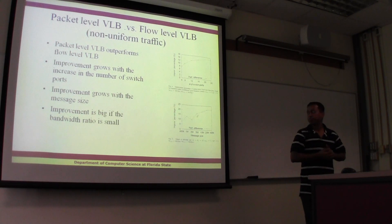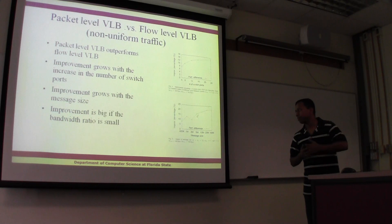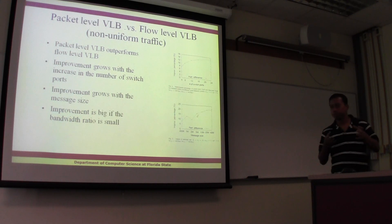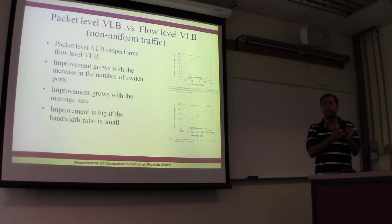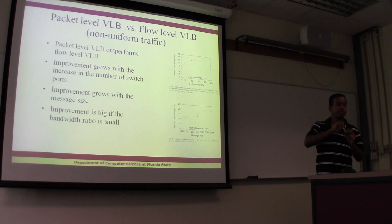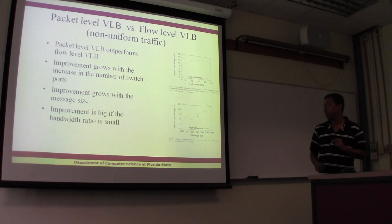With flow-level VLB, what happens is a few big messages get congested — everyone ends up using the same link, and the congestion cannot be removed until the complete message is transferred.